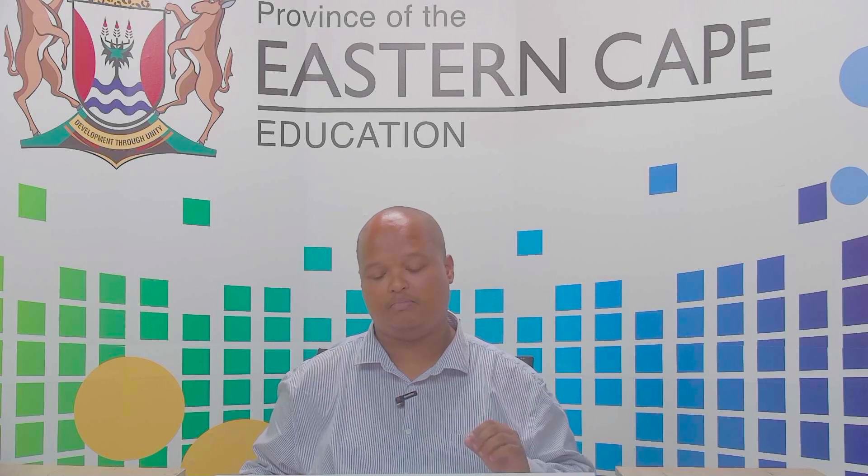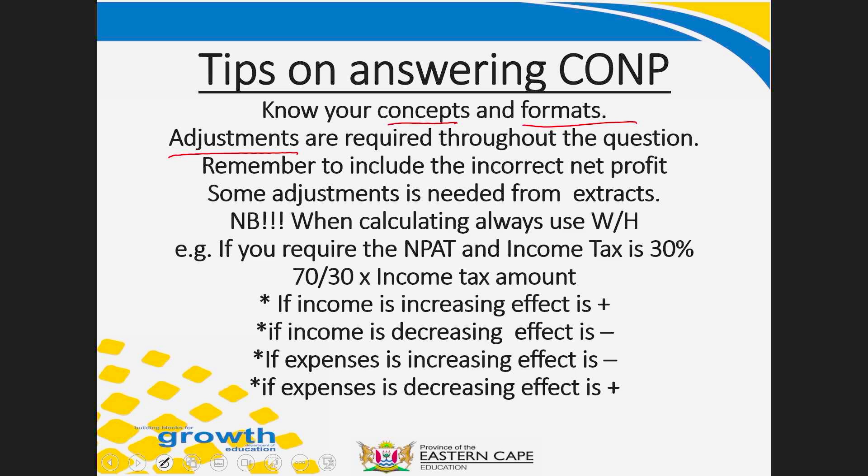Adjustments will be required in the correction of net profit. There will be a section — for example, Extract B — giving you the incorrect net profit before adjustments, followed by a list of adjustments, normally incomes and expenses. The question will state that the following was not taken into account when net profit was calculated. You must then ensure you do each adjustment and determine its flow: will it increase or decrease the net profit? Use the White House method to calculate any figure that needs adjusting.